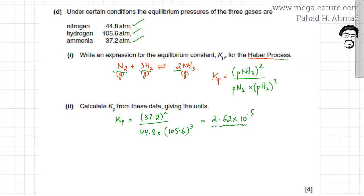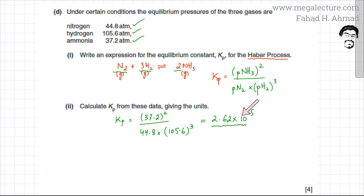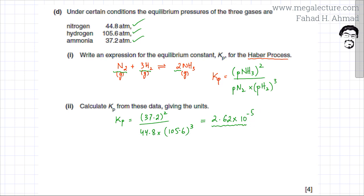The rule for significant figures is that your answer should be expressed to the least number of significant figures in your input values. Here, two of the input values are to 3 significant figures, so the final answer should be expressed to 3 significant figures: 2.62 × 10⁻⁵. We also need to give the units.